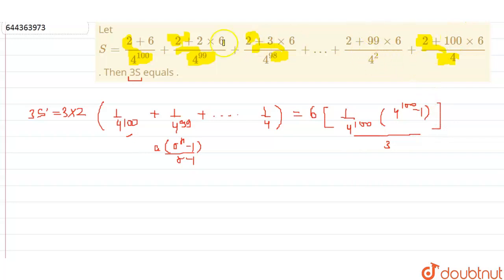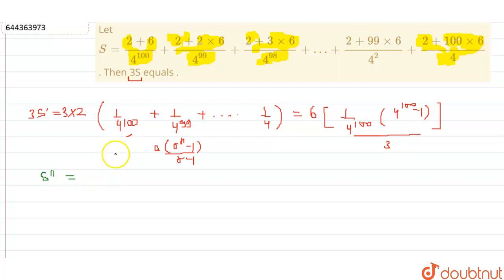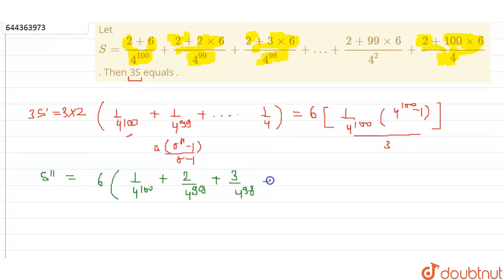Now consider the other part of the series: 6 upon 4 to the power 100, plus 2 times 6 upon 4 to the power 99, plus 3 times 6 upon 4 to the power 98, and so on up till 100 times 6 upon 4. We call this part S double dash. Taking 6 common, S double dash equals 6 times: 1 upon 4 to the power 100, plus 2 upon 4 to the power 99, plus 3 upon 4 to the power 98, up till 100 upon 4.